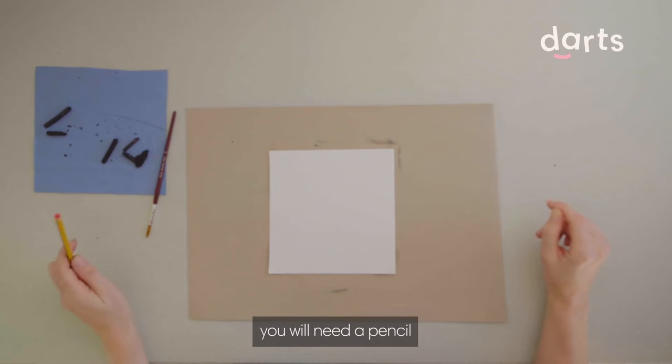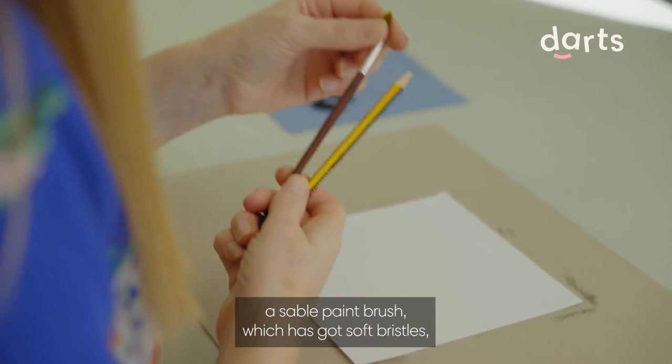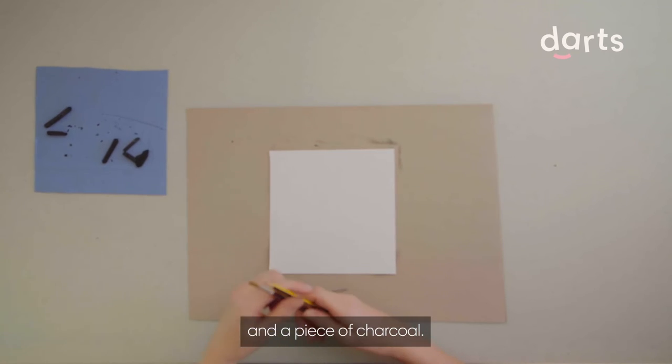For this blending exercise you will need a pencil, a sable paintbrush which has soft bristles, and a piece of charcoal.